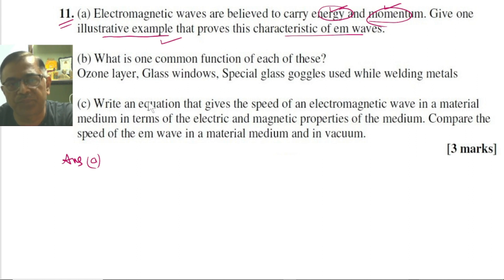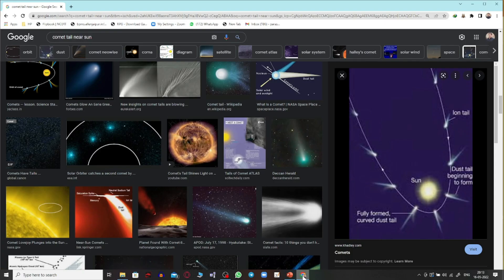I would like to show an image from the net itself. In this diagram which you could see on the extreme right, as the comet approaches the Sun, its tail becomes directly away.